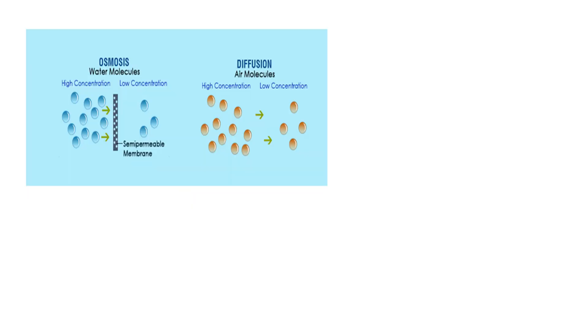From the previous question, here is a better idea of osmosis versus diffusion. Osmosis is the process in which water molecules move from higher concentration to lower concentration through a semi-permeable membrane — a membrane which allows only some materials to pass through. Diffusion is also the movement of molecules from higher concentration to lower concentration, but diffusion does not need a semi-permeable membrane. Osmosis is used specifically for water molecules.